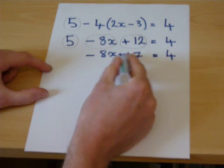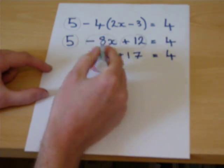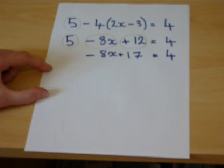5 plus 12 is plus 17. There always was a minus 8x there. This equals 4.